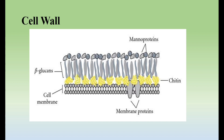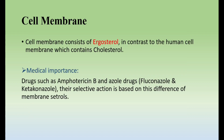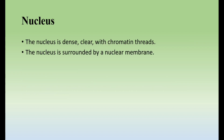The cell wall contains chitin, beta-glucans, and mannoproteins. The cell membrane of fungi contains a special molecule known as ergosterol. Ergosterol is analogous to cholesterol in humans — in humans it is cholesterol, but in fungi it is ergosterol. The medical importance of ergosterol is that drugs which block its synthesis can be used as antifungal therapy. Drugs such as amphotericin B and the azole drugs — fluconazole, ketoconazole — exert their selective action based on this difference in membrane sterols. The nucleus is dense, with chromatin threads and surrounded by a nuclear membrane because fungi are eukaryotes.